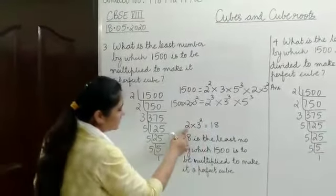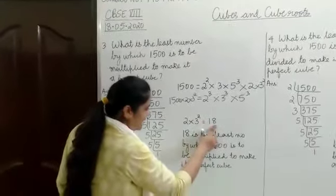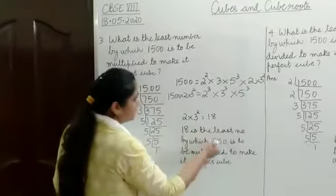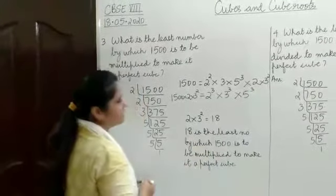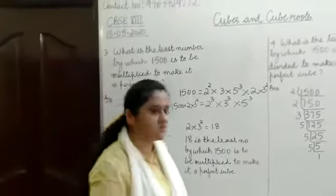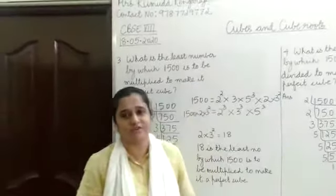So what if we multiply by 2 into 3 squared? What is the number? 18. 2 times 9 is 18. Which means 18 is the smallest number or the least number by which 1500 must be multiplied to make it a perfect cube.